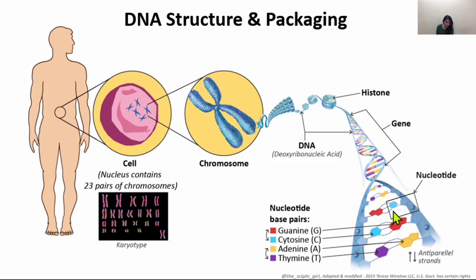The sugar molecule in DNA is deoxyribose, as the name suggests. Each base within a nucleotide pairs up with another base, making up base pairs — and that's basically the genetic code. A always pairs with T, and G always pairs with C. That's the rule, and that's how the two strands are formed. Essentially it's like a ladder where the bases make up the center and the sugar-phosphate molecules make up the outer part, called the sugar-phosphate backbone.